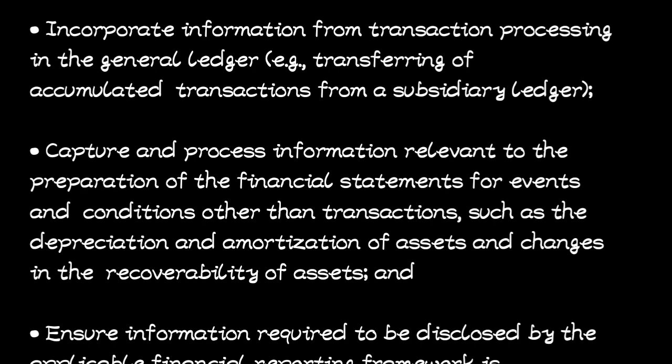The information system must also be able to incorporate information from transaction processing into the general ledger — for example, transferring accumulated transactions from the subsidiary ledgers to the general ledger. It must also capture and process information relevant to the preparation of financial statements for events and conditions other than transactions, such as depreciation and amortization of assets and changes in the recoverability of assets.